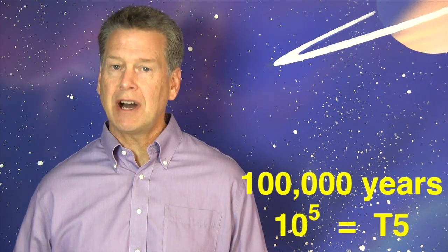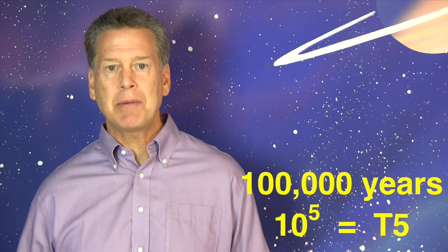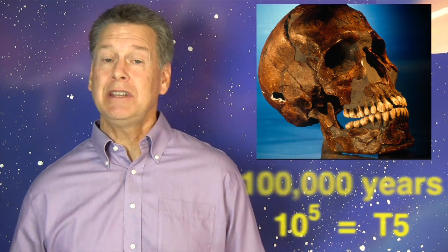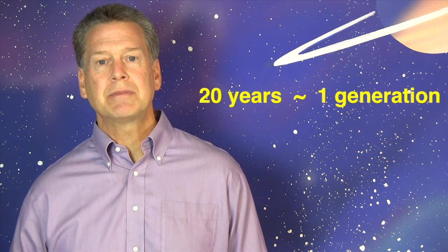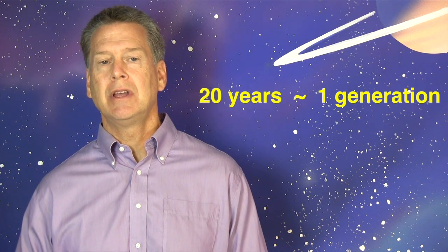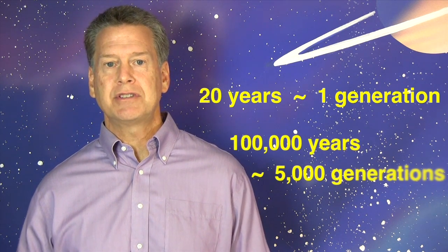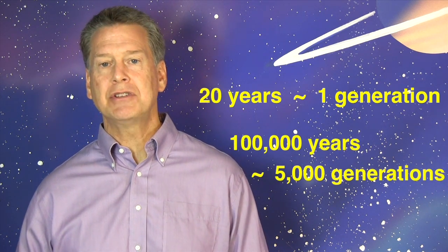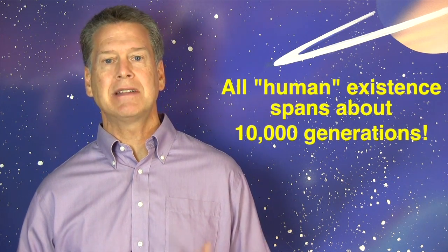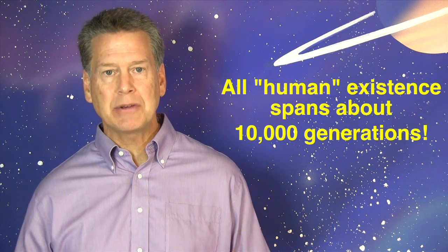If we go back 100,000 years, we do encounter anatomically modern humans. I'm pretty much a T5 guy. Consider that 20 years is roughly the duration of a single human generation. So 100,000 years is about 5,000 generations. That's a nice insight. All of human existence spans 5 or 10,000 generations.